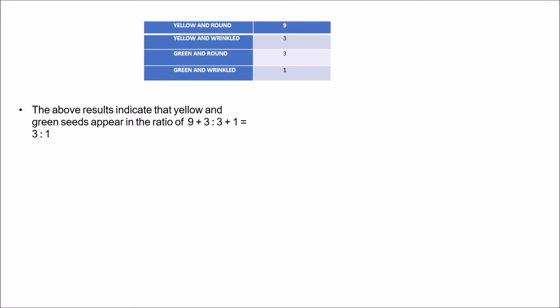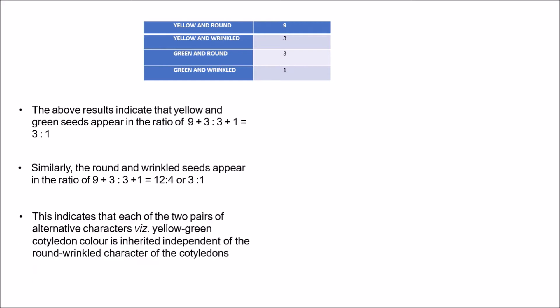Yellow and round: 9, yellow and wrinkled: 3, green and round: 3, and green and wrinkled: 1 — giving a phenotypic ratio of 9:3:3:1. The above results indicate that yellow and green seeds appear in the ratio of (9+3):(3+1) = 3:1. Similarly, the round and wrinkled seeds appear in the ratio of (9+3):(3+1) = 12:4, or 3:1.